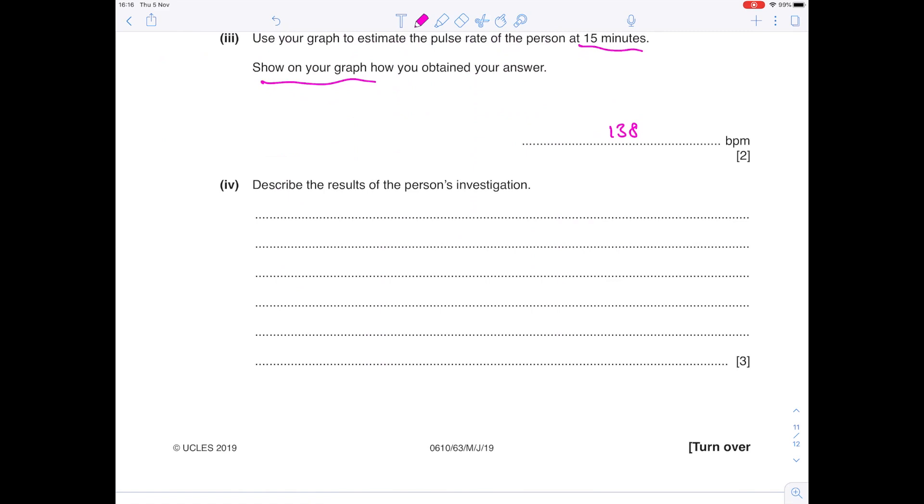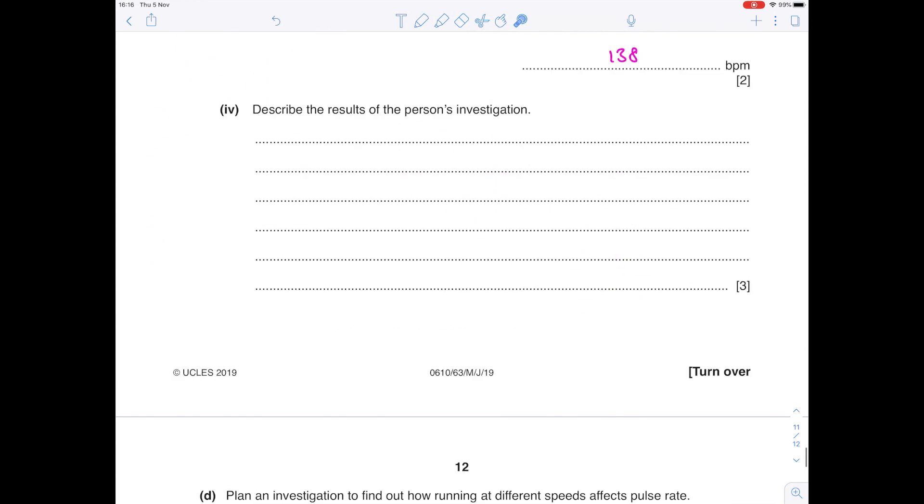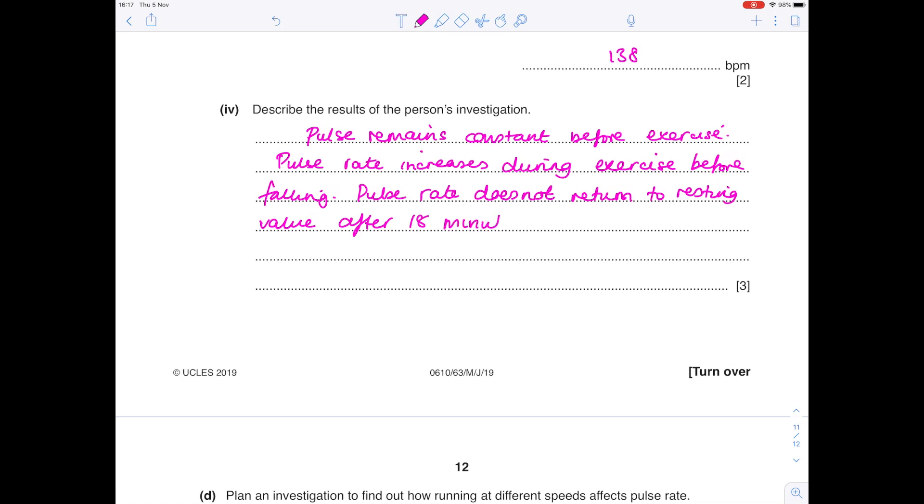Describe the results of the person's investigation. When you're describing results, you're saying what you see. And so you can see from the graph that the pulse rate remains constant before exercise. And that's the flat horizontal line seen here. Then we can see that it rises during exercise before gradually falling off. And then even after exercise, it doesn't reach its resting level. So we want to make three separate points. So pulse rate remains constant before exercise. Pulse rate increases during exercise before falling. Pulse rate does not return to its resting value after 18 minutes. And remember, you could state data to back up your findings.